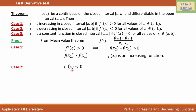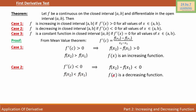Let's consider Case 2: f'(c) is less than 0. It simply means that the numerator of the Mean Value Theorem is less than 0. So I can write f(x2) - f(x1) < 0. If we further simplify, we can write f(x2) < f(x1), which simply means that f is a decreasing function.